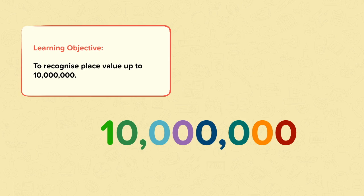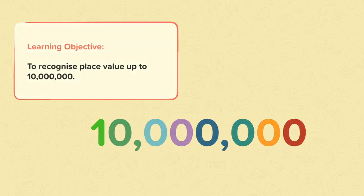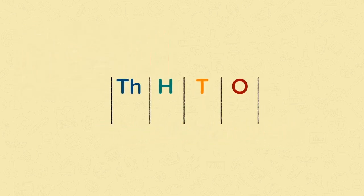This is 10 million written in digits. All the digits in this number represent different values depending on where they are in the number. We can use place value grids to help us recognise place value.